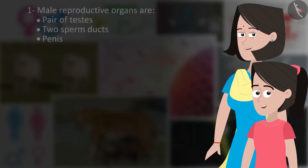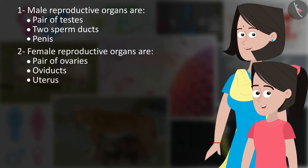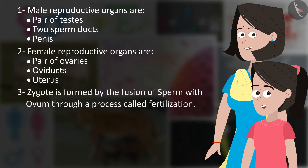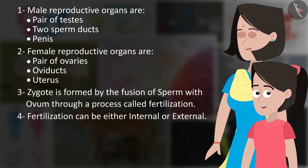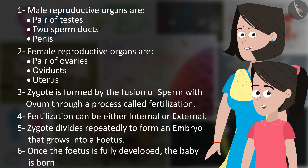Let us summarise our learning. Male reproductive organs are: pair of testis, two sperm ducts, and penis. Female reproductive organs are: pair of ovaries, oviducts, and uterus. Zygote is formed by the fusion of sperm with ovum through a process called fertilisation. Fertilisation can be either internal or external. Zygote divides repeatedly to form an embryo that grows into a fetus. Once the fetus is fully developed, the baby is born.